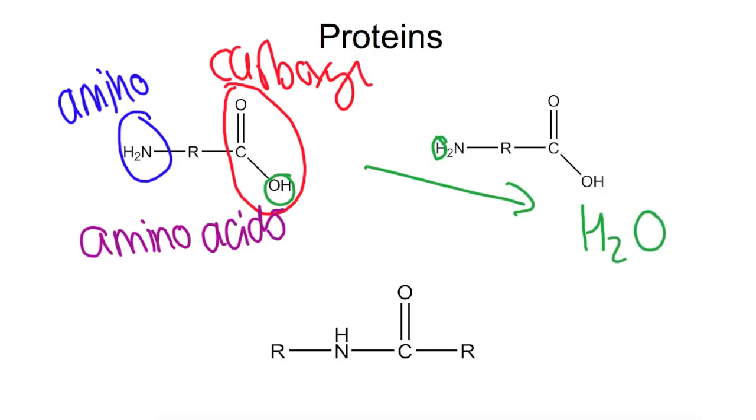The two parts that are left will join to form this part here which we call the amide link or the peptide link. This here is quite analogous to the ester link. You can see we've got the C double bond O and the NH, whereas in the ester link we have the C double bond O and then just the O.